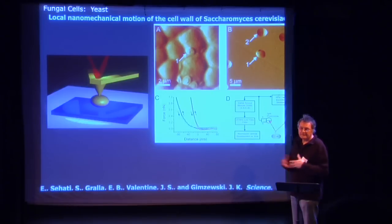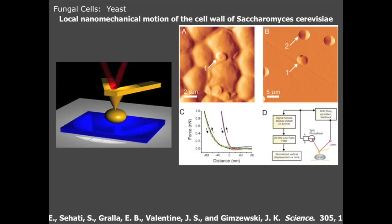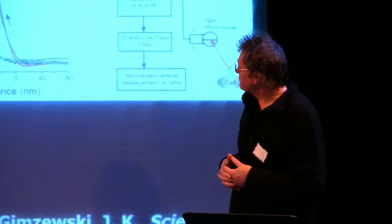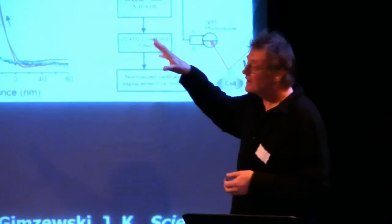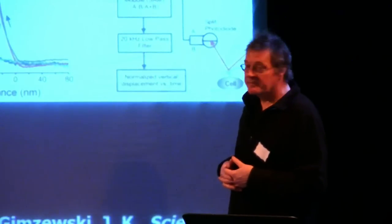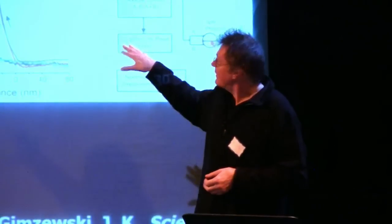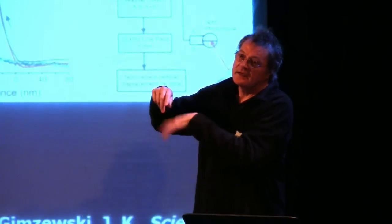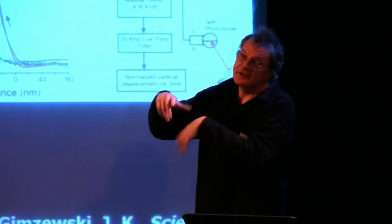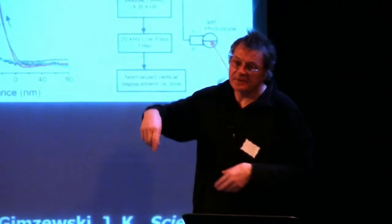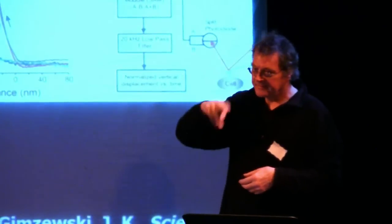The way we started this work was to look at yeast. Yeast is found in beer and bread. We started to study the actual motion of yeast cells. This paper Morris is talking about was published in Science a few years ago. We use an atomic force microscope, which is a type of finger on the nanoscale. A yeast cell is about a twentieth the diameter of your hair.